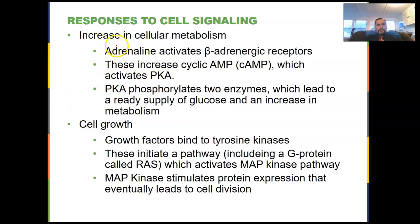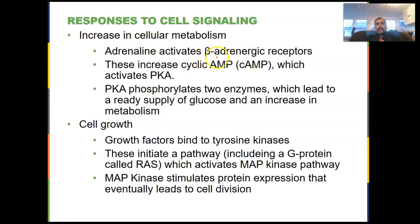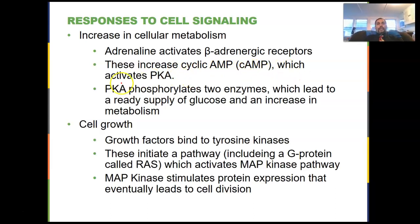We're going to start with two different cell responses. The first one is adrenaline — the basic fight-or-flight response. When something occurs that triggers fight-or-flight, we get a release of adrenaline. Adrenaline is the ligand in this case, and it's going to activate receptors called beta-adrenergic receptors. These are surface-mounted G-protein coupled receptors on the surface of a cell. Ultimately, activation of those receptors causes an increase in cyclic AMP, or cAMP, which in turn activates PKA.